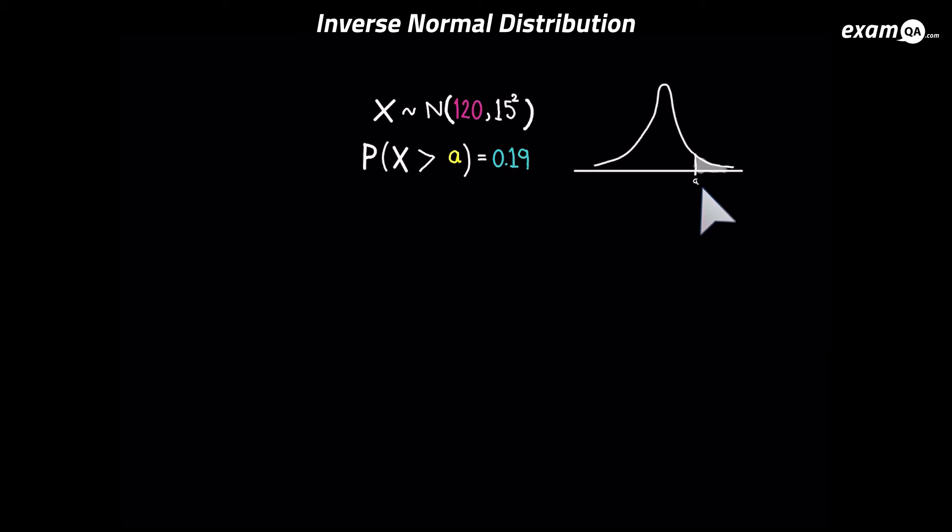So as it is, the diagram's like this. We know the area to the right of a. And the area to the right of a is something small, less than 0.5. So I know a is on the right hand side of the diagram.